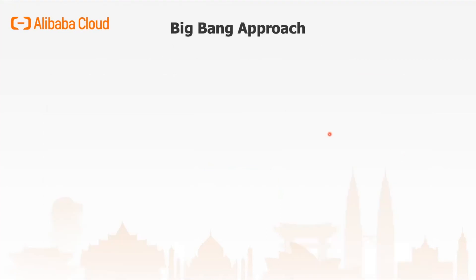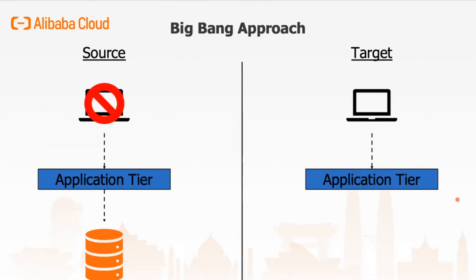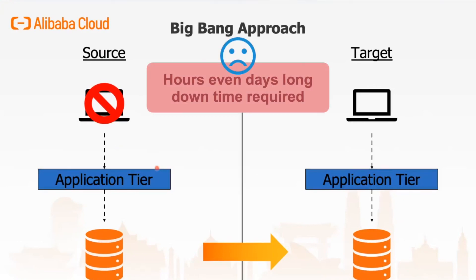This is how a Big Bang approach looks like. You have your source and target database. Your client is connecting to the application tier, which connects to the database. First, you build your application tier in the cloud and create your database. During the downtime itself, you stop all client access on the source side, start replicating your data — doing an export and import on the database. Once it's done, you point your application to connect into your new database, and that is when the downtime is completed. Depending on your database size, this migration approach can take up to hours or even days. So for a lot of businesses today, especially startups where services are required to be online 24/7, this might not be a feasible approach.